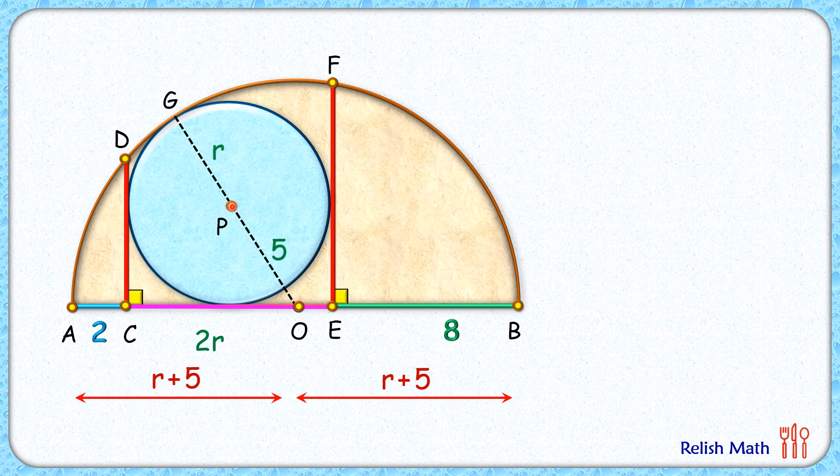Let's drop a perpendicular from P on this pink tangent, that's r centimeter length. How about HO length? Now for HO length, let's consider AO—that's radius which is r plus 5, out of which AC is 2 and CH is same as r centimeter. And thus HO length will be r plus 5 minus r minus 2, so HO length will be 3 centimeter.